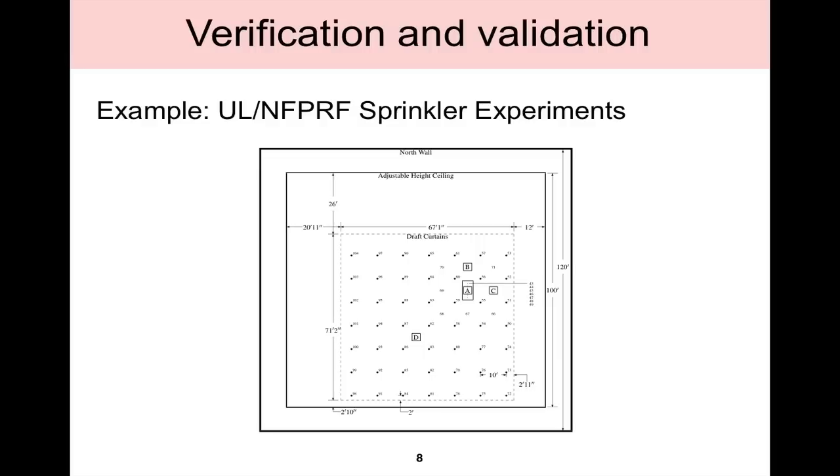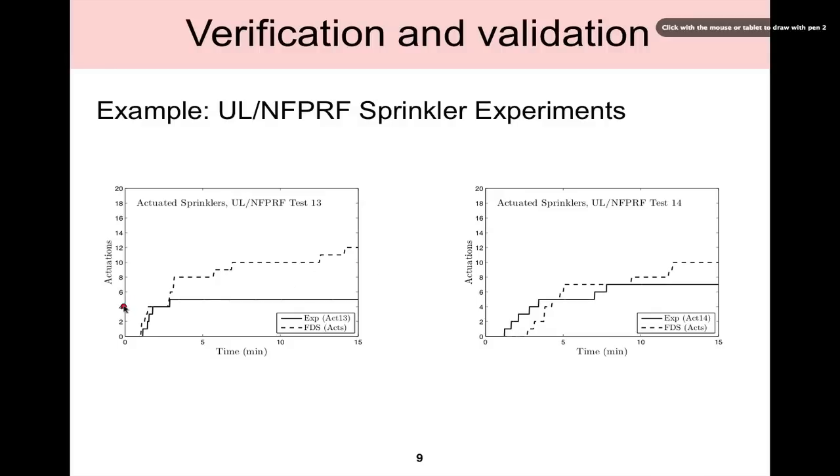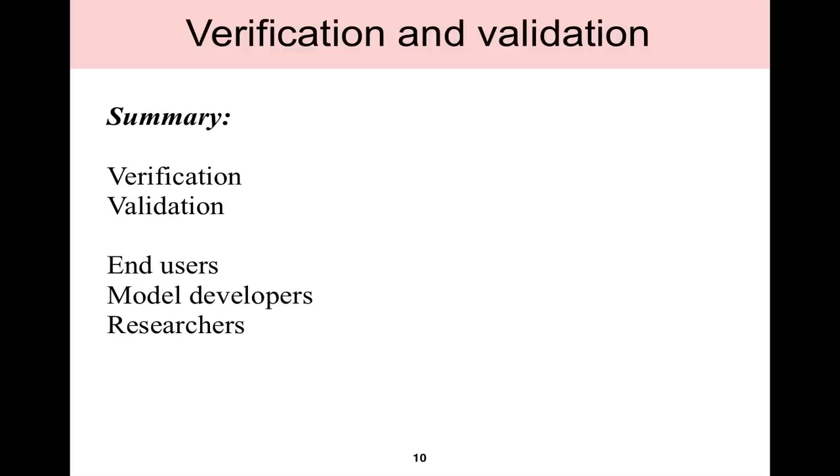There's another example from UL and NFPA research foundation experiments where sprinkler activations were modeled. Here's a layout of the experimental setup where draft curtains were present, and sprinklers are shown here as the different dots. FDS was modeled in the same way. Here are a couple of the plots from that part of the validation guide where the number of actuated sprinklers is shown over time. The solid line is the experimental data and FDS is the dash line here. This compares sprinkler activation in FDS, and it's important to note that these are provided as information to the end user. Ultimately it's in the hands of the user or designer to determine if FDS or any other fire model is adequate for the problem they're handling.